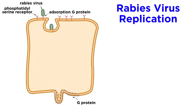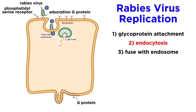The way that it replicates is as follows. First, the glycoprotein spikes of the virus attach to the host cell. This attachment triggers endocytosis, where the plasma membrane of the host cell folds inward and forms a membrane-bound vesicle called an endosome around the virus, essentially trapping the virion in a plasma membrane bubble within the host cell.